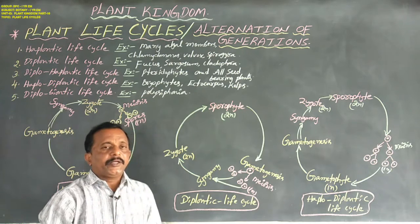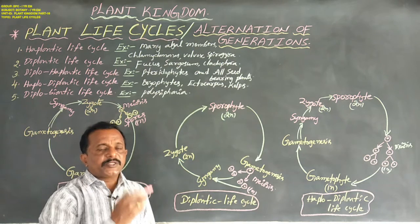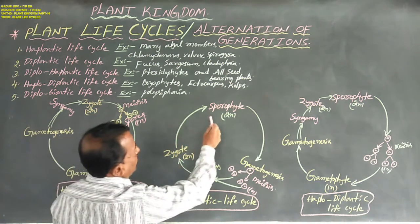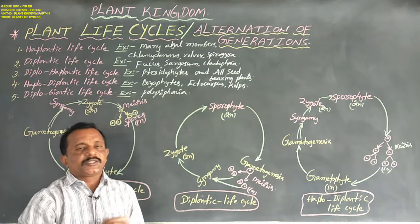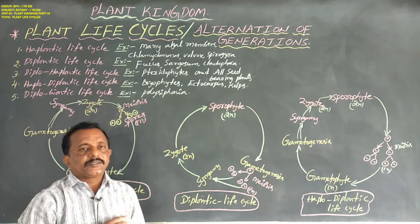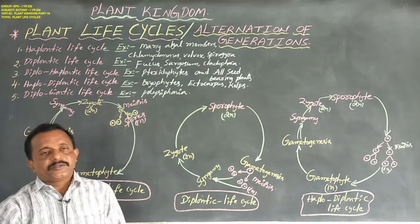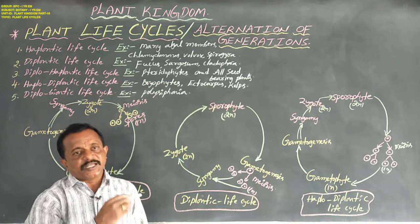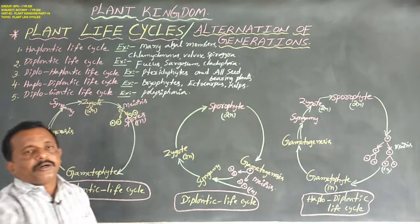In the gametophytic plant body, haploid gametes are produced. These gametes fuse to form a diploid zygote or a diploid sporophyte. In this haploid character, it undergoes meiosis to produce haploid gametophyte and diploid sporophyte. This phenomenon is termed as alternation of generations.